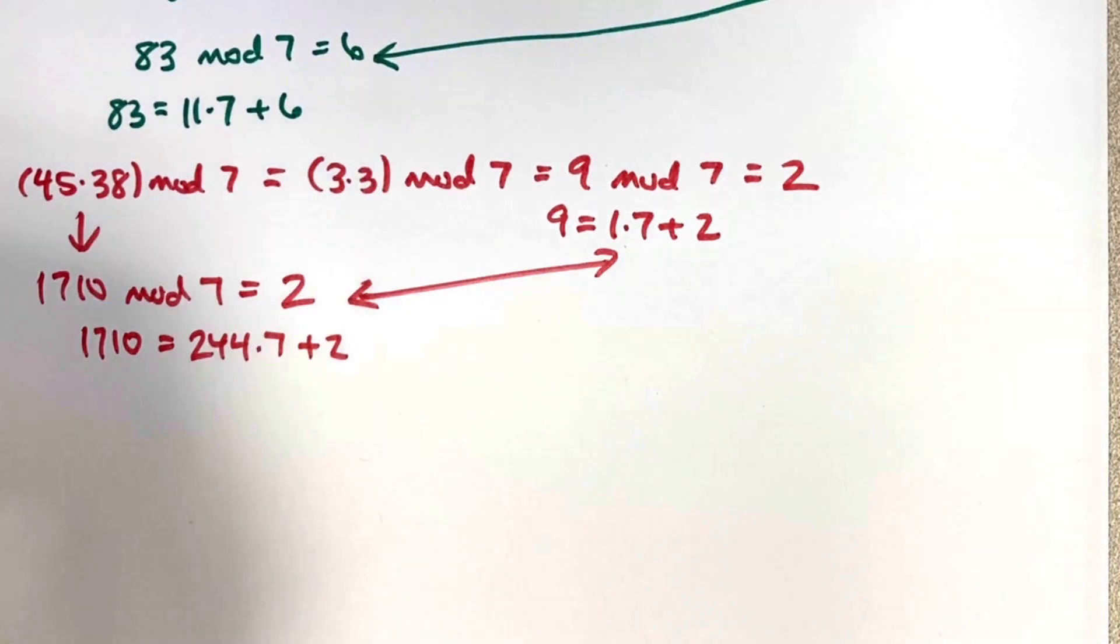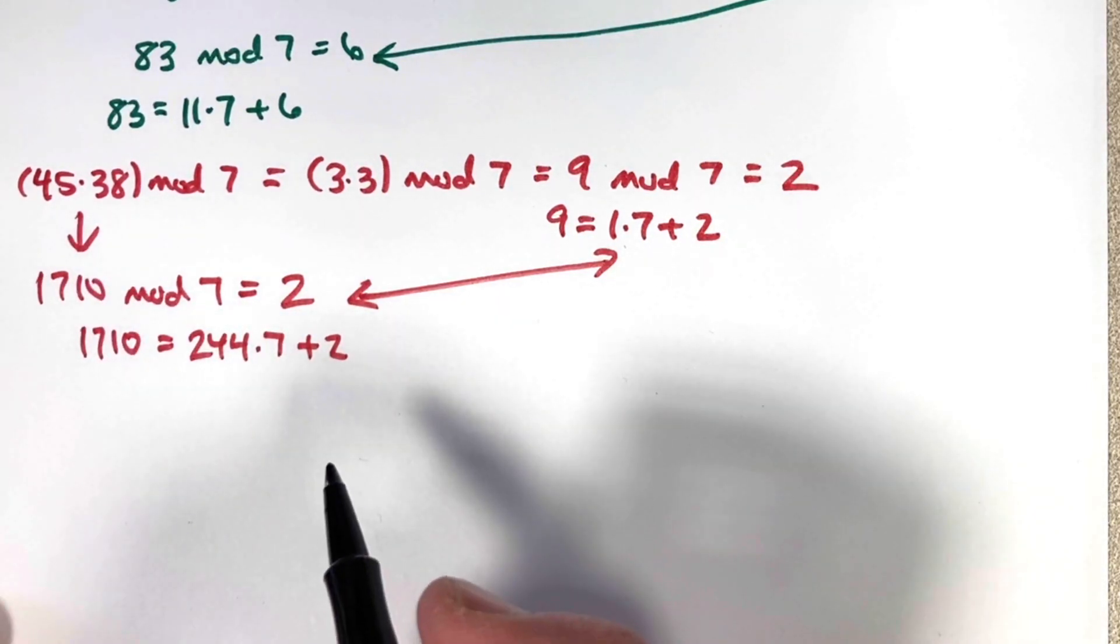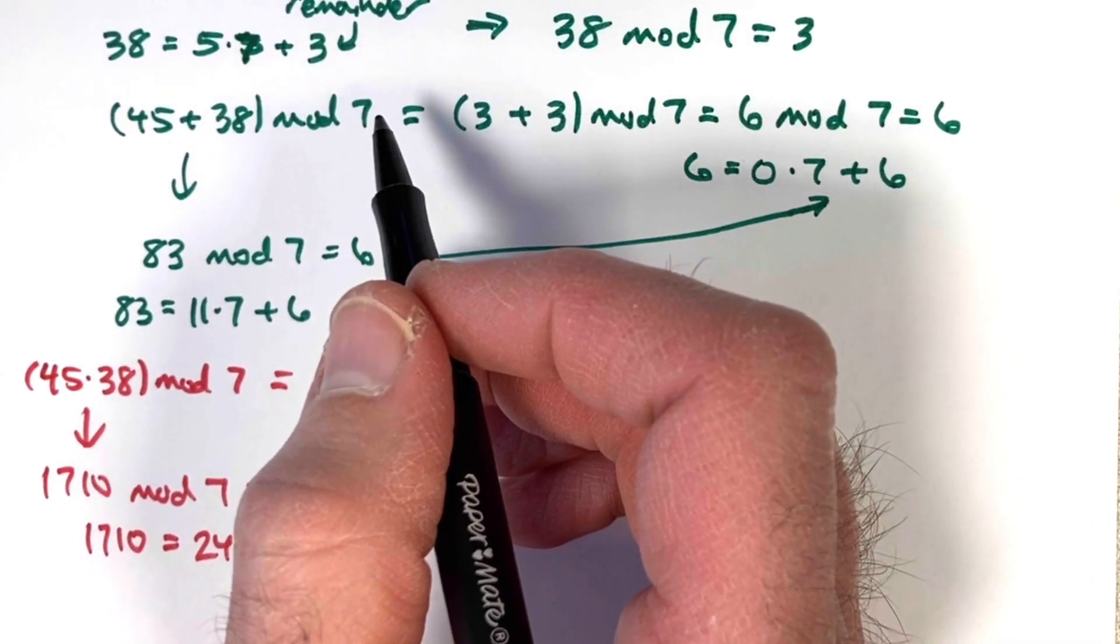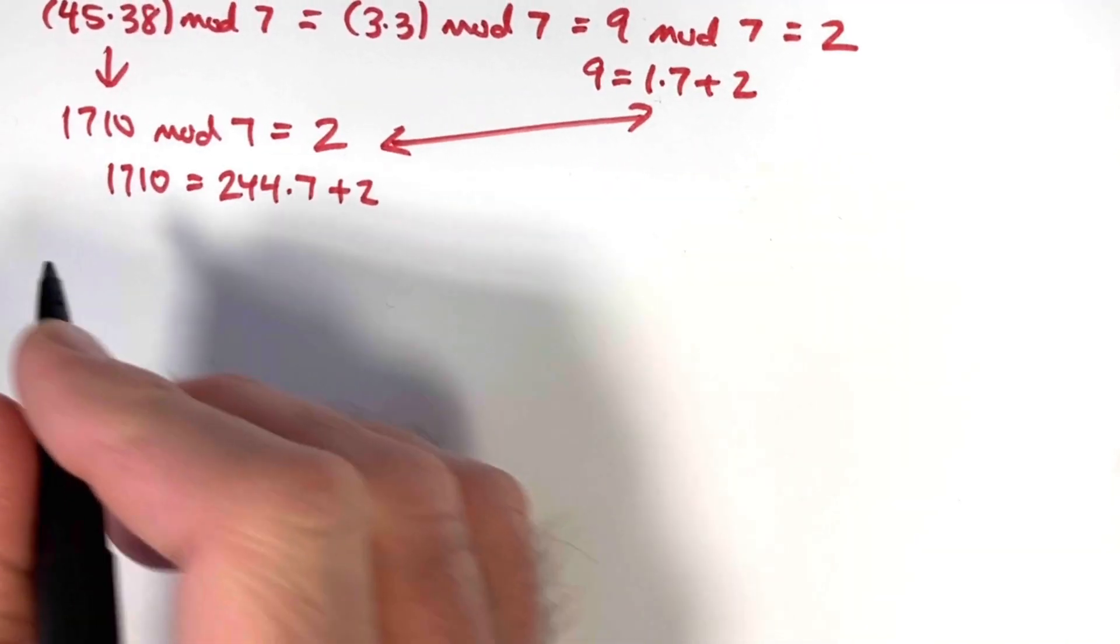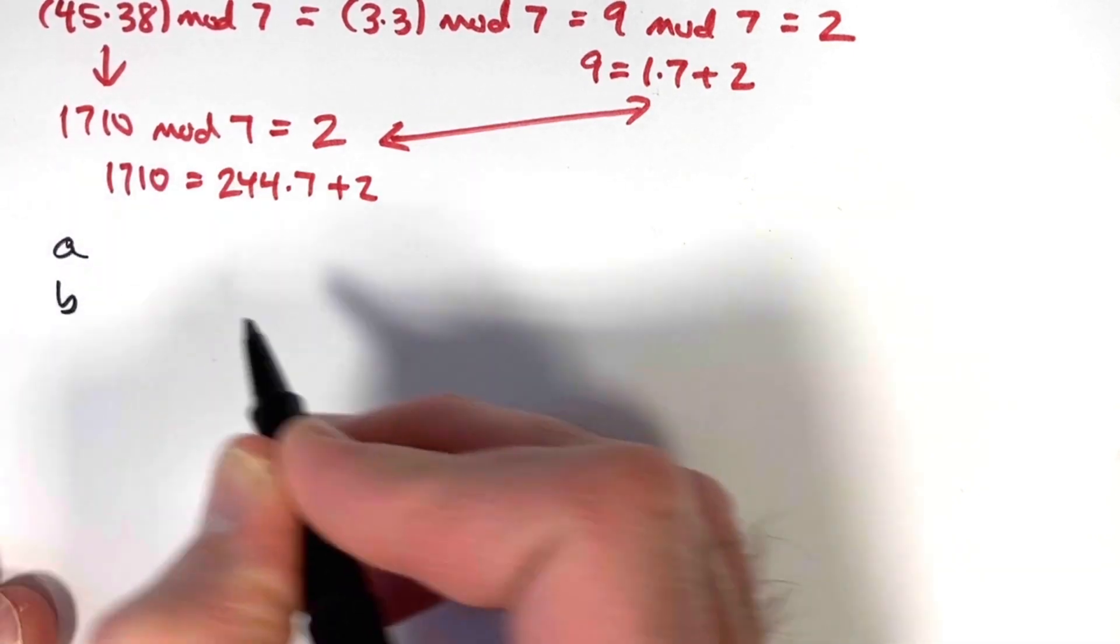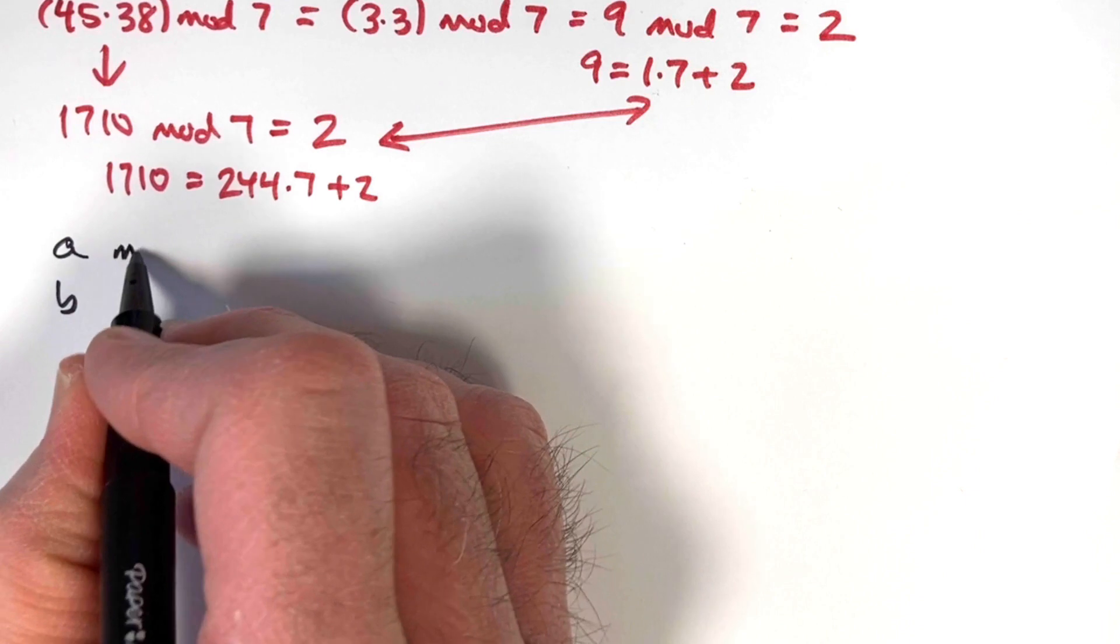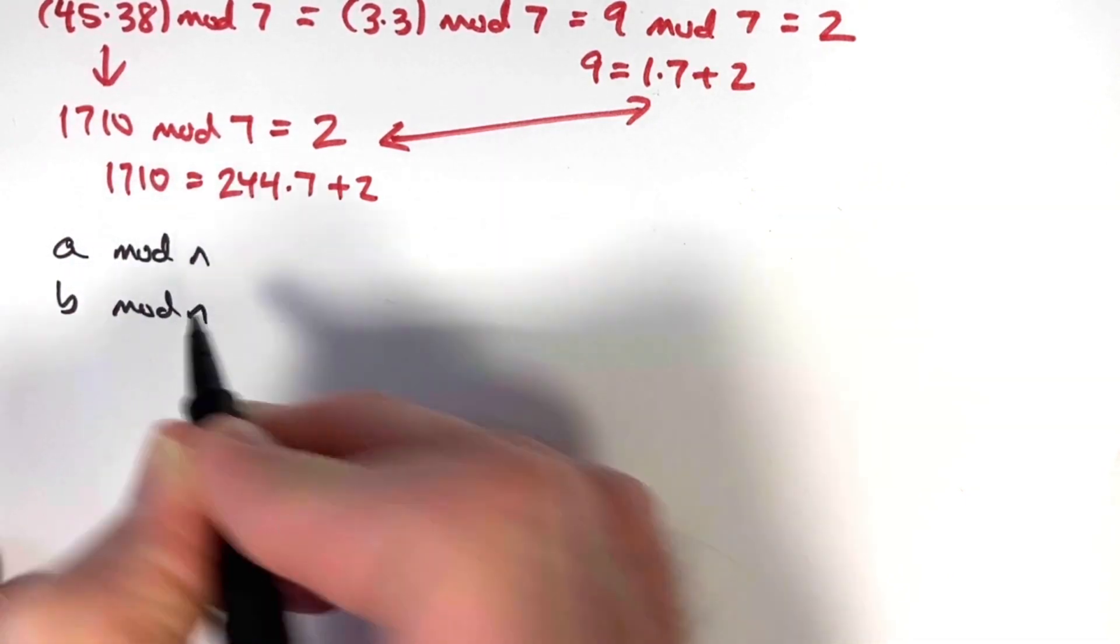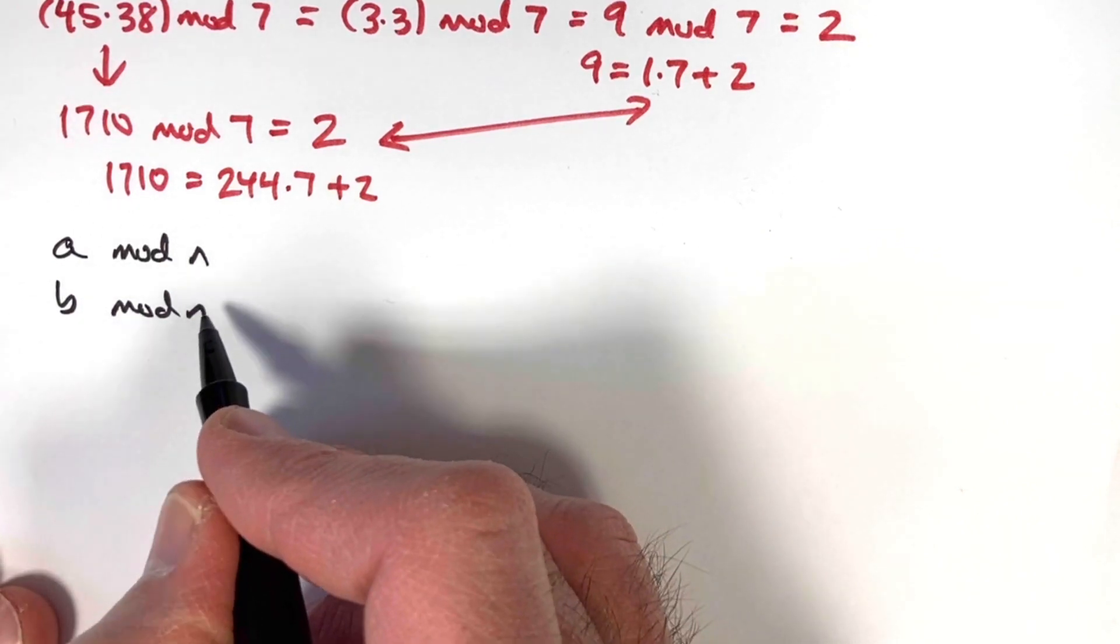But now, why does this work? Let's do it for the more mysterious one, the multiplication, and I'll leave the proof for the less mysterious one, the addition, to you. Let's suppose we've got two numbers, call them a and b, and I'm going to mod these with some number n. So for our problem, a was 45, b was 38, and n was 7.